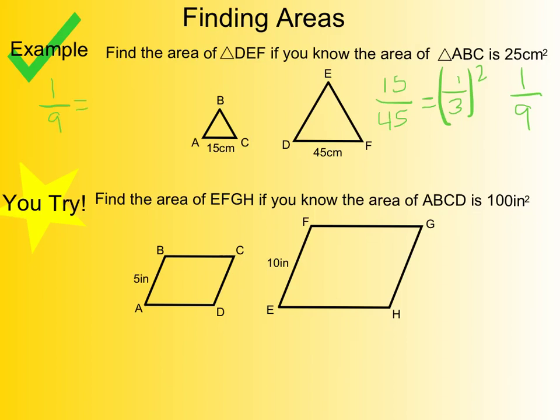The actual value they've given us for ABC, which is the smaller triangle, is 25. They want us to find the larger area. So we need to do some cross multiplication.